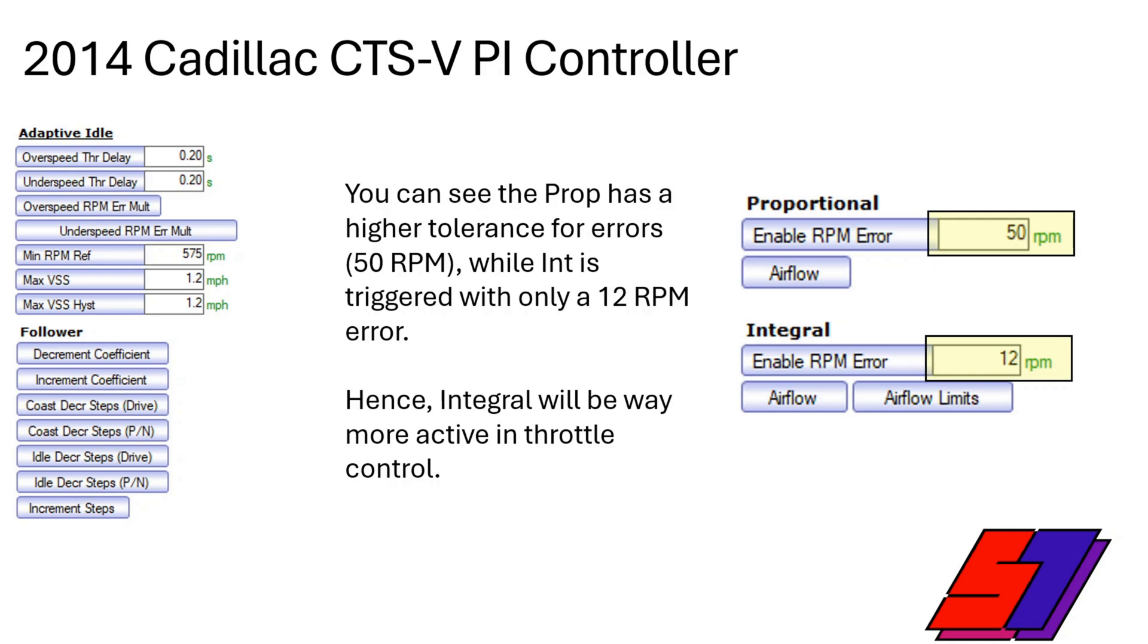But what you're going to see is integral all over the place, and maybe not all over the place but you're going to either see it hanging high or low or whatever but it's not going to be zero. The reason why is if you look at those RPM errors, you have to have an error of greater than 50 RPMs for proportional to do anything. But integral is basically always being triggered - an error of 12 RPMs or more and integral's jumping in and it is working.